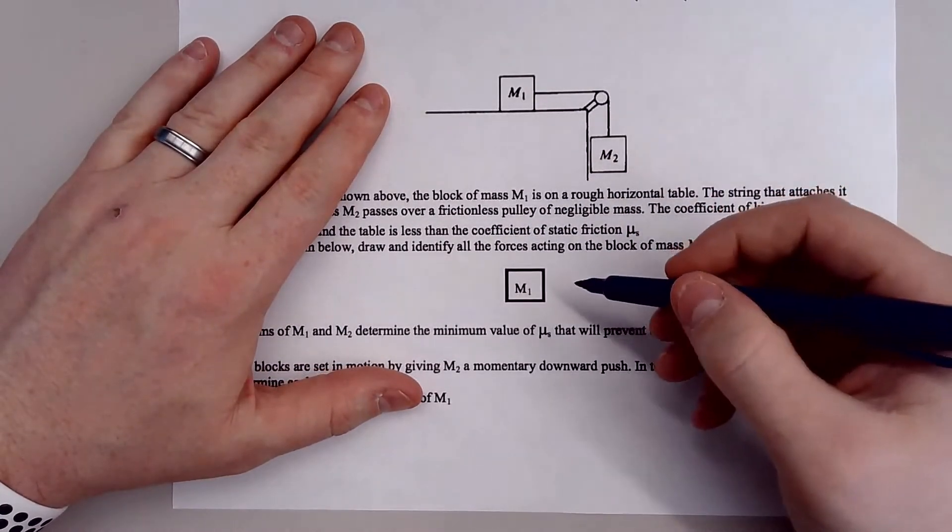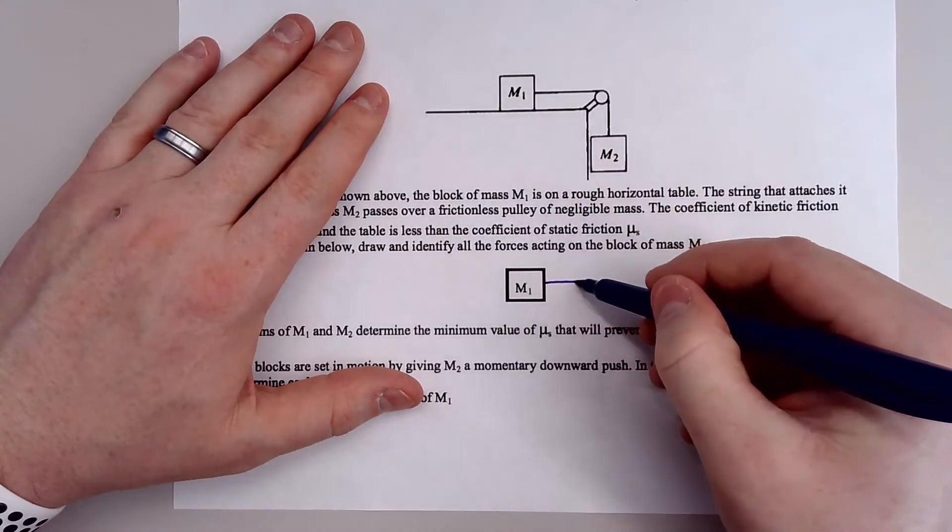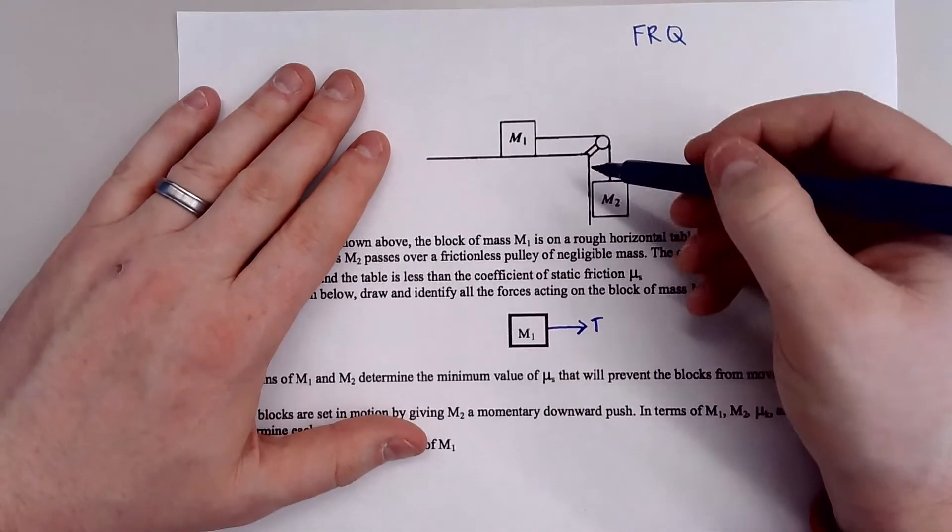draw and identify all the forces acting on the mass 1 block. So on the M1 block, if we look, notice that we have a tension pulling to our right. So here, I'll try to draw this right here.